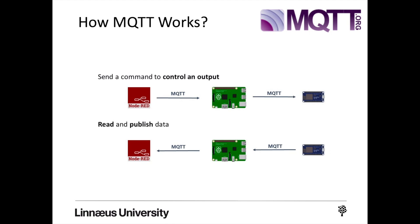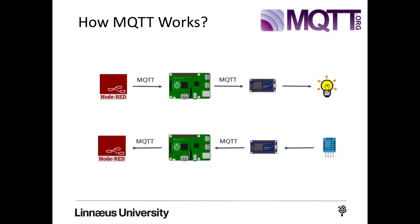So how does MQTT work? This shows a basic working principle for MQTT. As mentioned earlier, it is a lightweight publish and subscribe system where you can publish and receive messages as a client. You can send a command with a client like Node-RED or any other platform to control an output, or you can send data from a sensor and publish it to a client like Node-RED or any other platform.